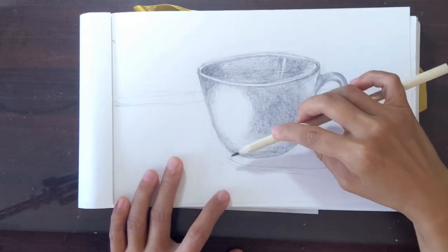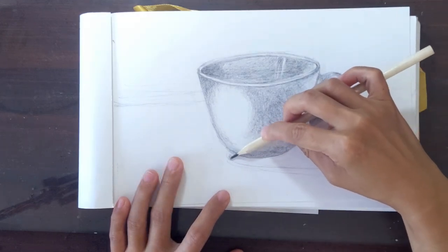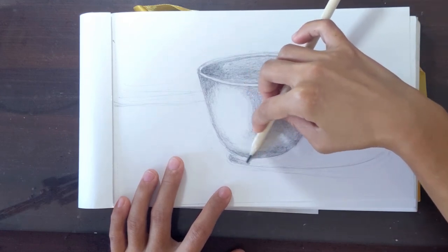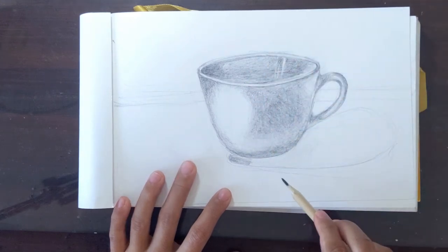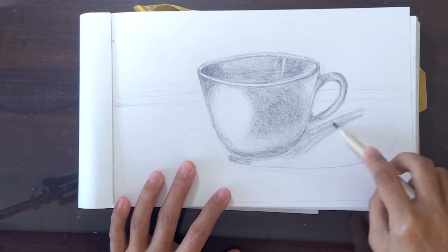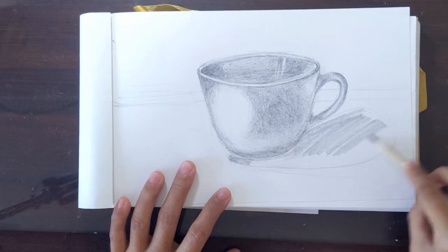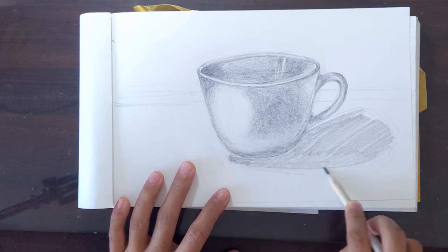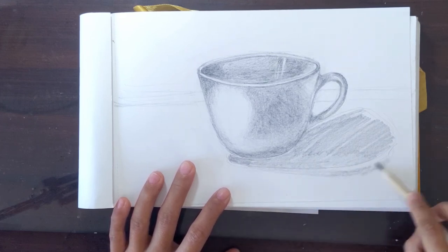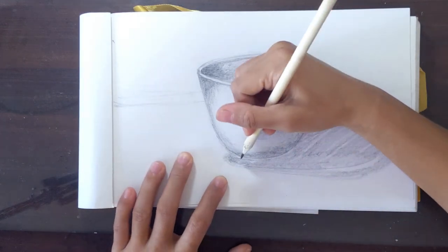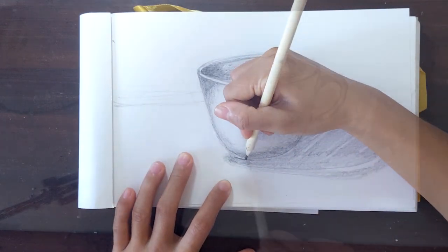Once you're happy with the cup, we can now do the shadow. Follow the guidelines you made before and always go back to your model to get the shadows correctly. Shade lightly and just come back to make the shadings darker. Make sure that your shadow is darker than your cup so that the cup will pop out.